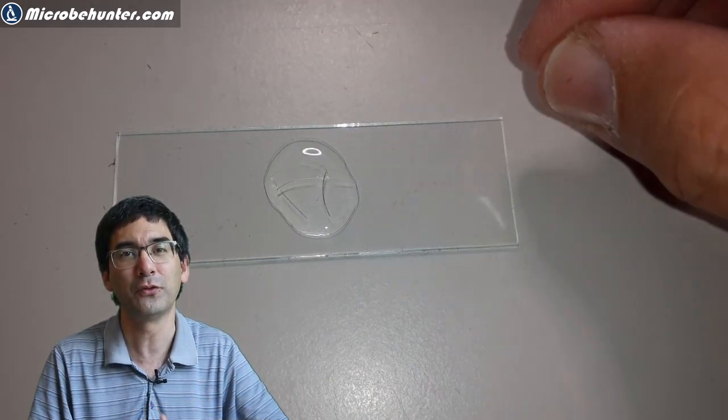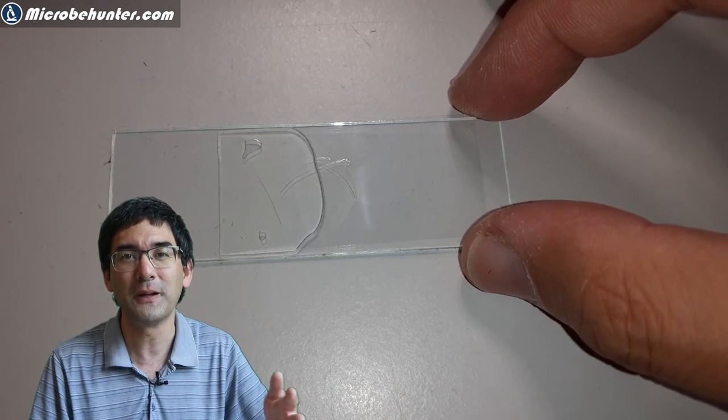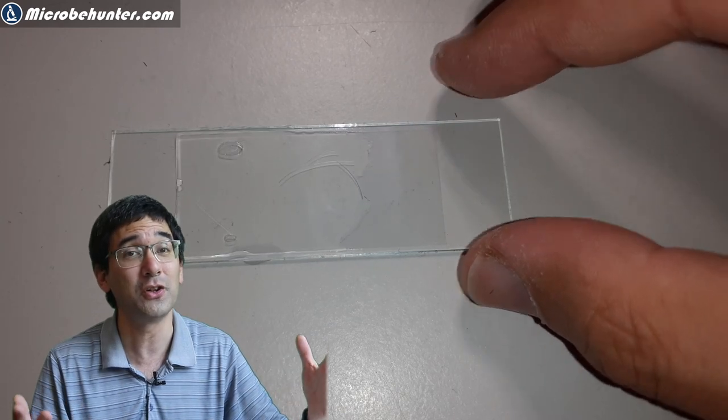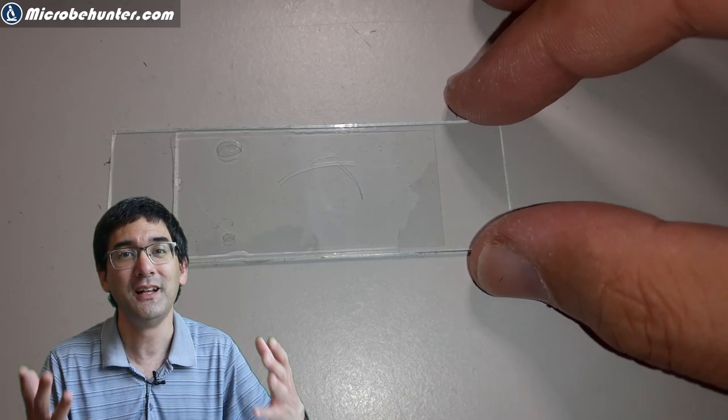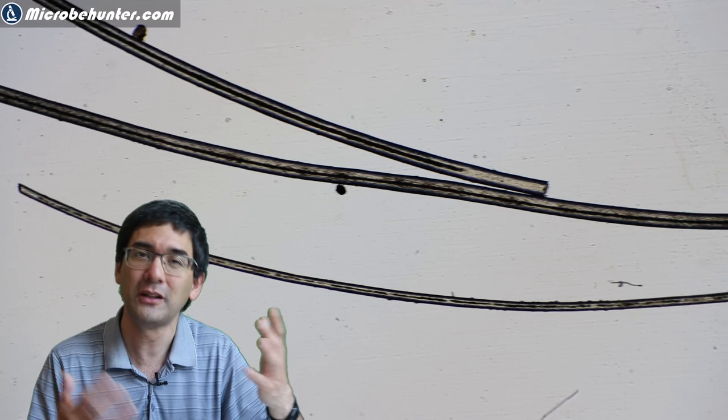Cover glass goes on top, and then I observed it directly under the microscope, first in bright field. This is where it's also possible to see that different hairs have different thickness. Maybe it depends on the age of the hair follicle. I don't know.